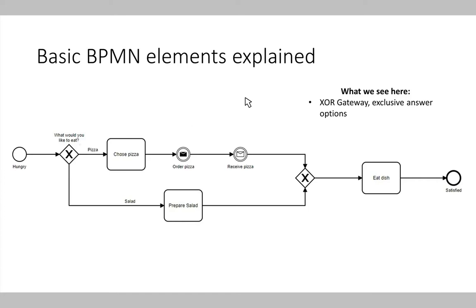Another element of the BPMN modeling language are gateways, represented by a diamond shape with a small icon indicating the gateway type. The first gateway is an XOR — exclusive or — gateway. The process starts with being hungry and arrives at the gateway. If we decide to eat pizza, the process takes the upper path: choose a pizza, order it, receive it, eat the dish. If we opt for salad, we prepare a salad, eat it, and the process ends. An XOR gateway enables us to choose one or another process path.